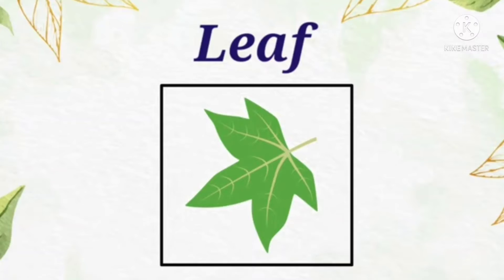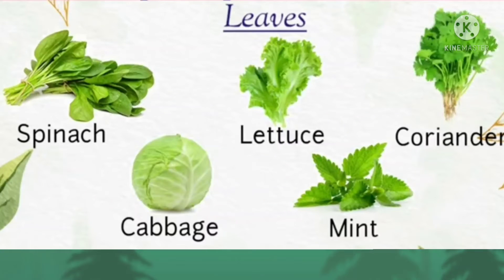Leaf. Dear children, the leaf is the most important part of a plant because it helps plants get energy by making food for the plant. Let us read what we intake in the form of a leaf. Dear children, we eat spinach, cabbage, lettuce, mint, and coriander as forms of leaves. We intake many vegetables as leaves, and we get lots of strength and refreshment from mint.